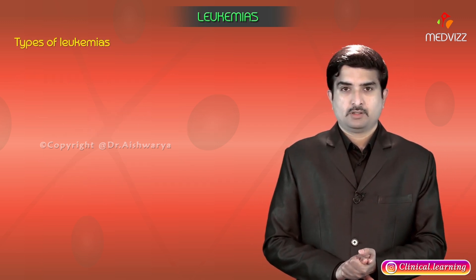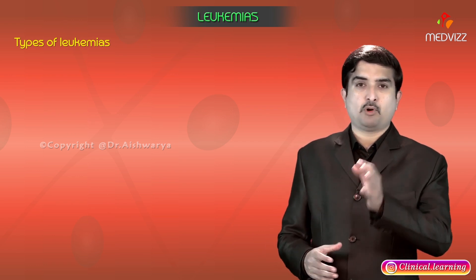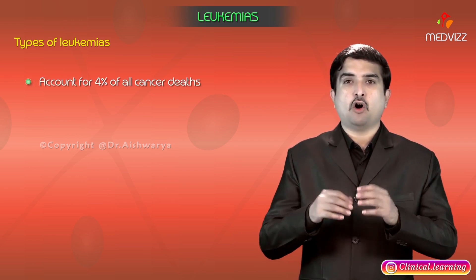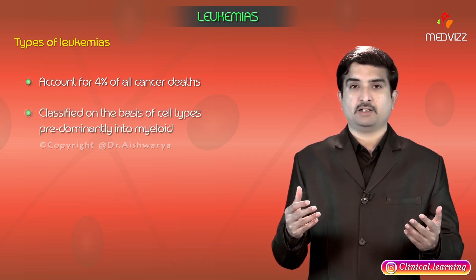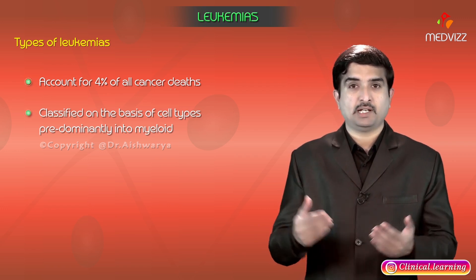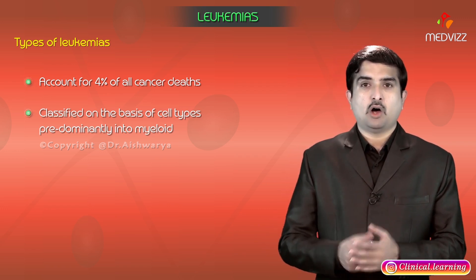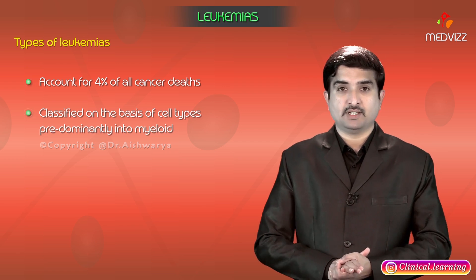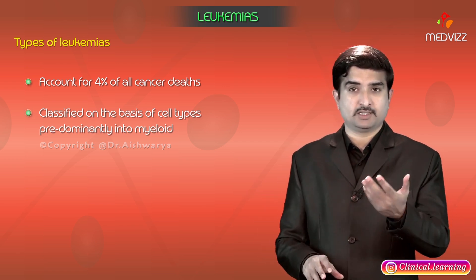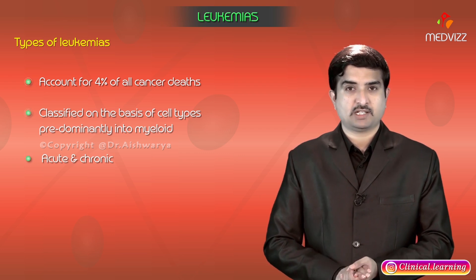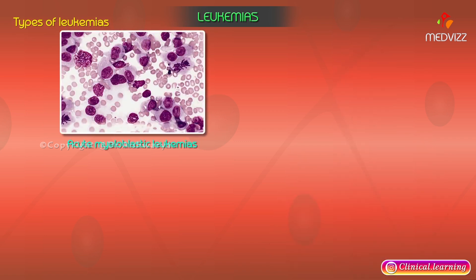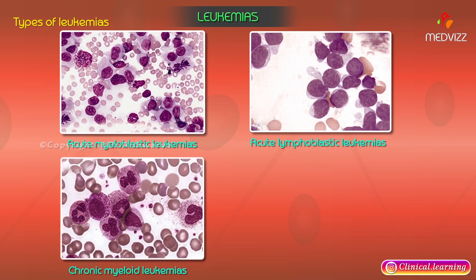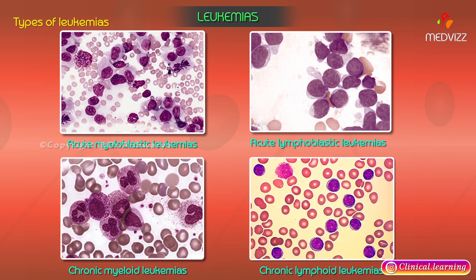Leukemias account for approximately four percent of all cancer deaths. They are classified on the basis of cell type — predominantly myeloid — and the natural history of disease, with each variety divided into acute and chronic types. There are four main types: acute myeloblastic leukemia, acute lymphoblastic leukemia, chronic myeloid leukemia, and chronic lymphoid leukemia.